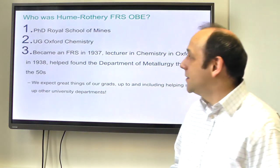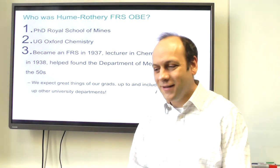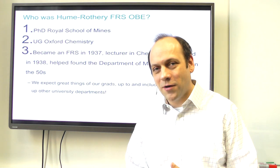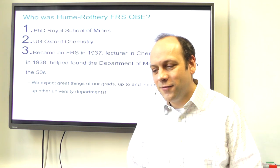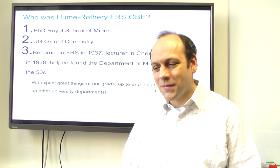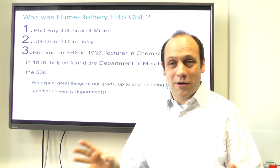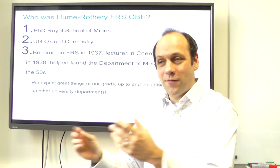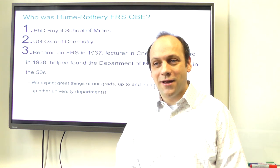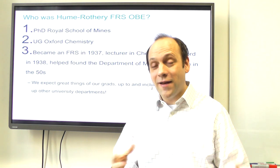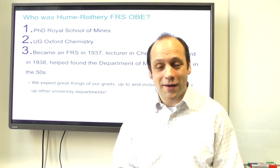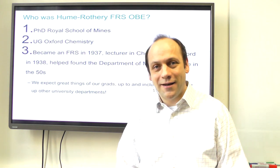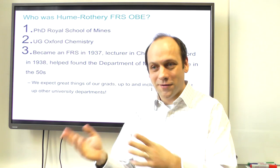The first thing we're going to look at is Hume-Rothery. He was a fellow of our society, an OBE, and one of the founders of the Department of Metallurgy — now Materials — in Oxford in the 1950s. His PhD was here at the Royal School of Mines, and his undergraduate degree was in chemistry at Oxford. At that time, material science and metallurgy didn't exist at Oxford, so being interested in metals, he came from chemistry to a metallurgy department.